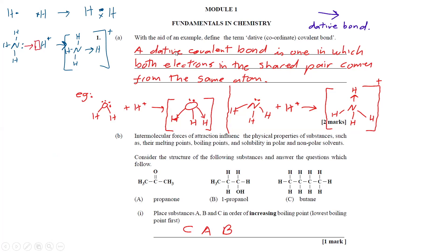Let's look at what a regular bond is as compared to a dative covalent bond. In a regular bond, both electrons in the shared pair come from each atom. Here we have H with one electron on the valence shell, and another H with one electron on the valence shell — they both combine to form the bond.